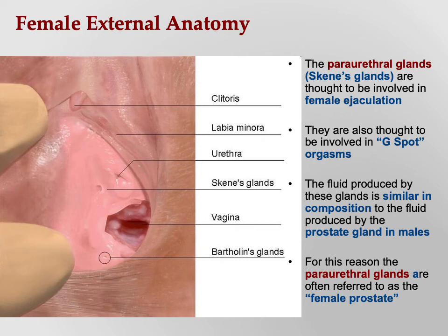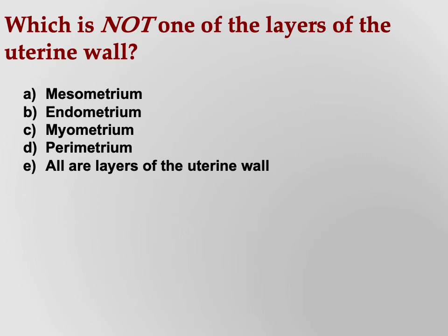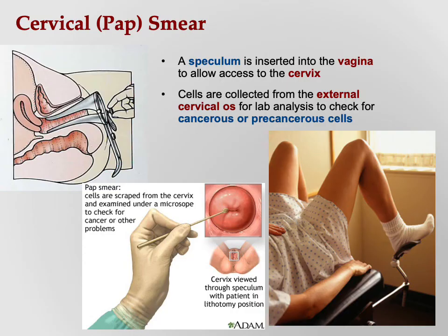Quiz question: which of the following is NOT one of the layers of the uterine wall? The mesometrium, endometrium, myometrium, or parametrium? The answer: mesometrium is not a uterine wall layer. The three layers are the endometrium, myometrium, and parametrium.